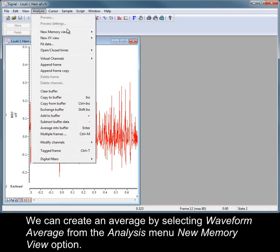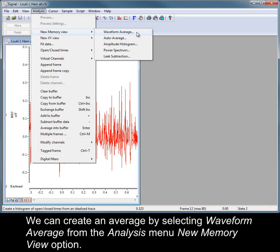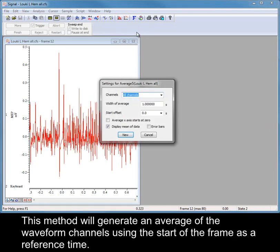We can create an average by selecting Waveform Average from the Analysis menu New Memory View option. This method will generate an average of the waveform channels using the start of the frame as a reference time.